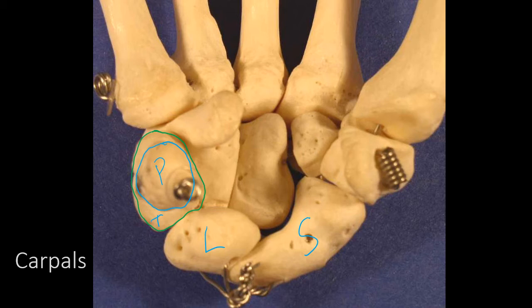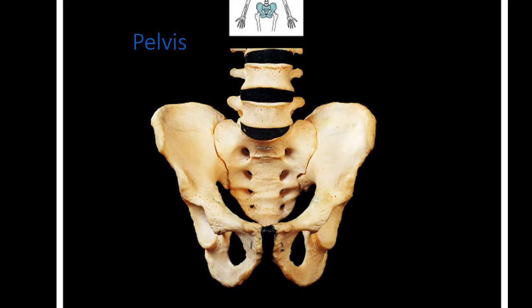On the thumb side we have the trapezium, then right next to it the trapezoid, then in the middle the capitate, and finally the hamate. So the full sequence is: scaphoid, lunate, triquetrum, pisiform, trapezium, trapezoid, capitate, hamate. Various mnemonics are available online to help memorize all the carpal bones.